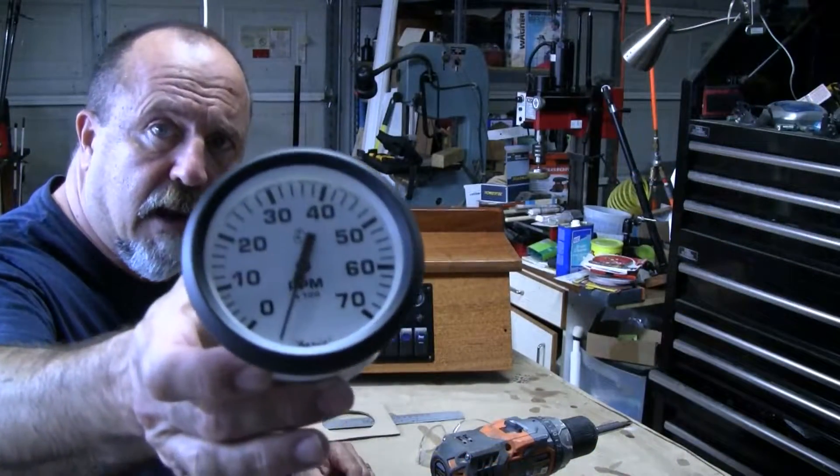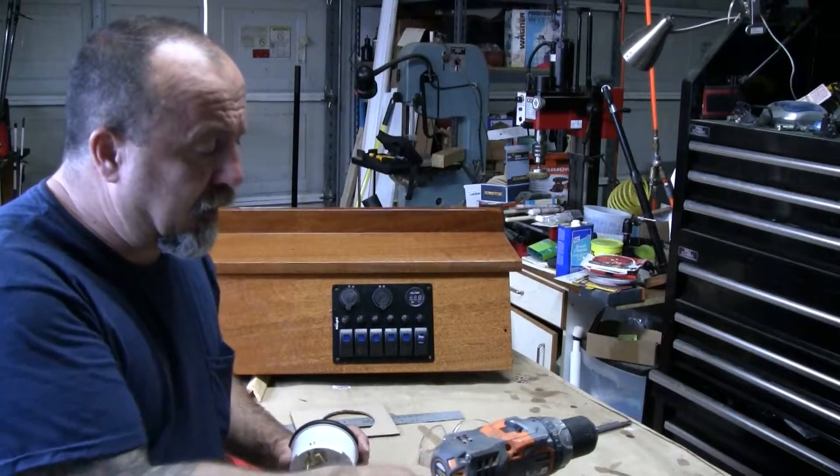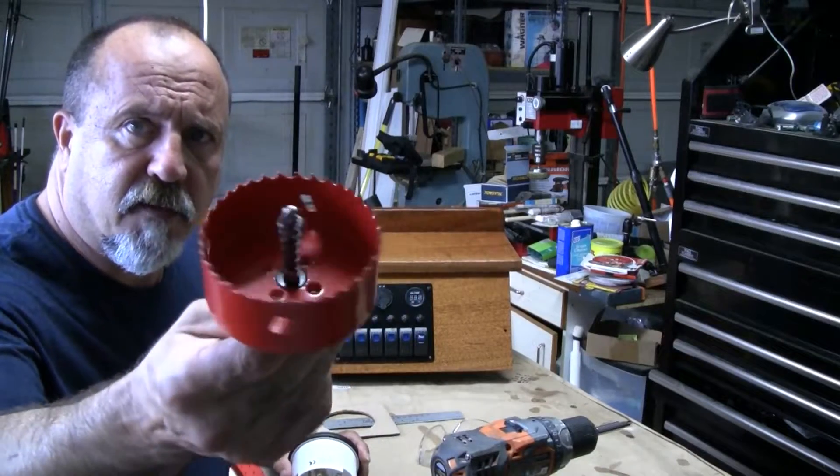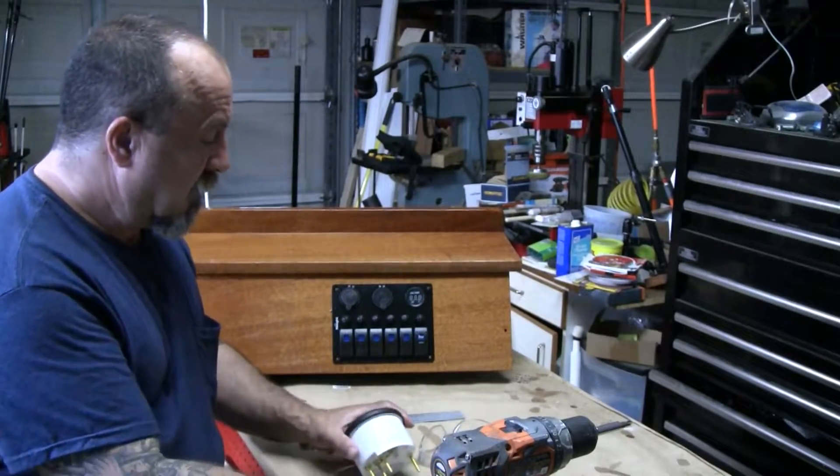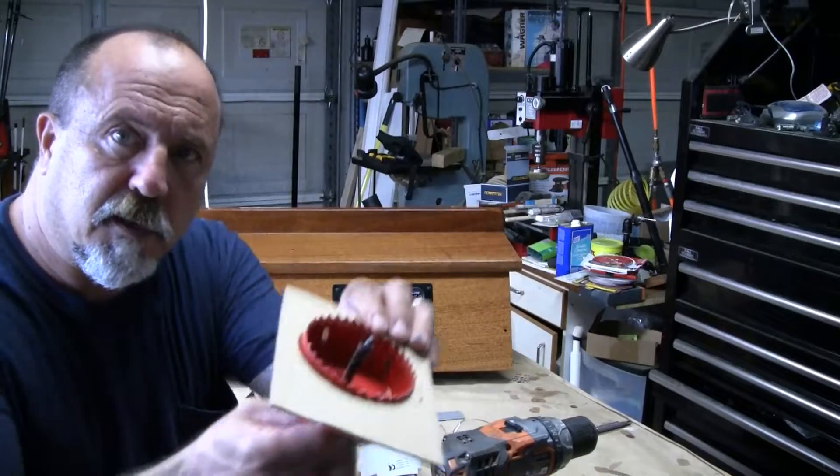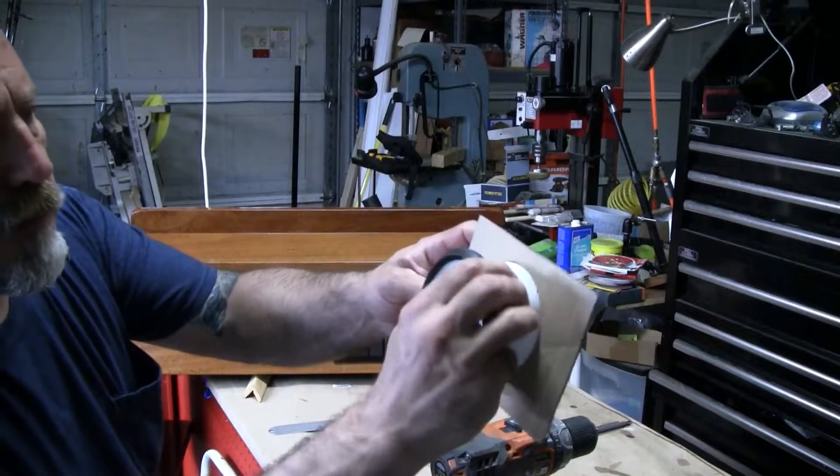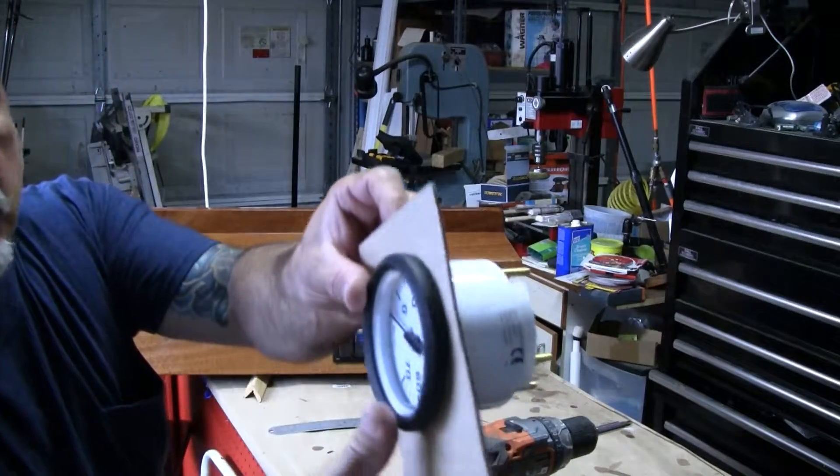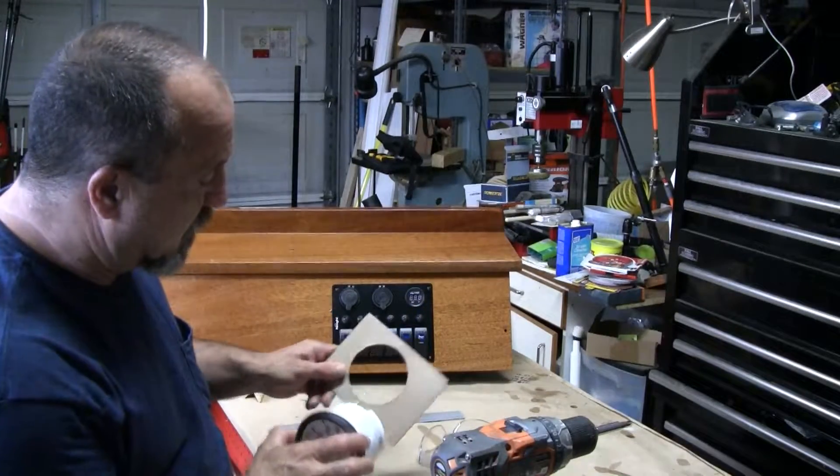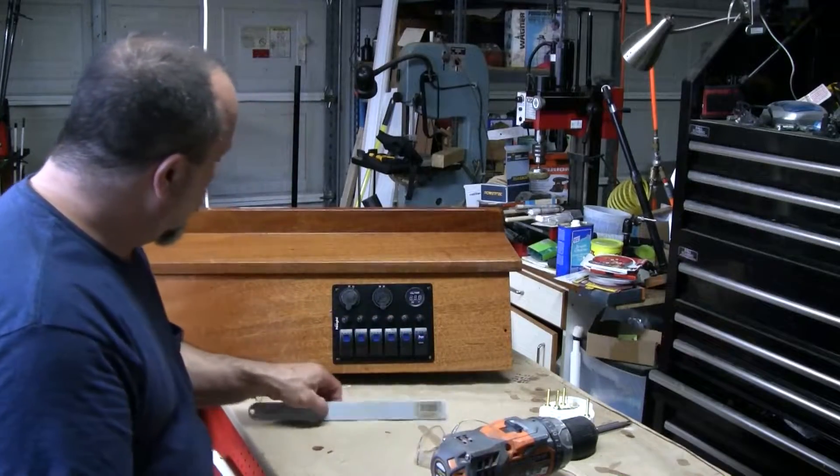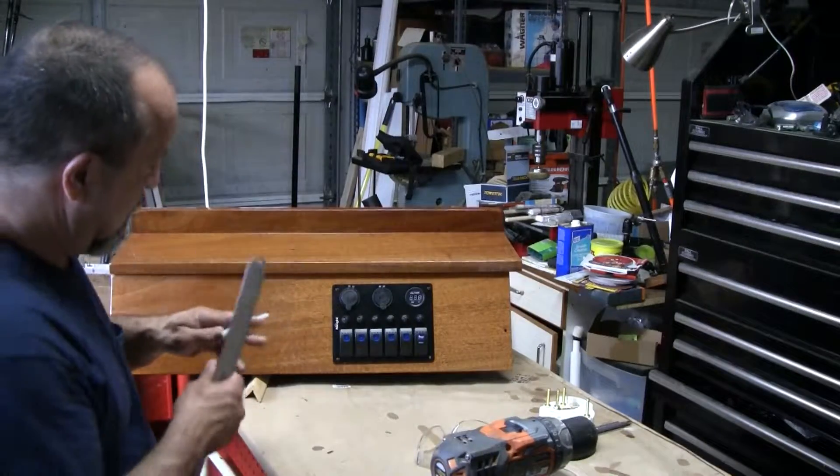Next thing I'm going to do is mount this tachometer, the Faria tachometer. It calls for a three and three eighths inch hole. And I ordered this because three and three eighths is kind of an oddball size. And it's actually 85 millimeter, which is a little bit small. What I did was I actually punched a hole in this piece of cardboard. And I can then see that this tachometer is going to fit, but it's a snug fit. Which is fine. I'd rather it be too small and then I can get a little barrel sander to open it up some. So I'm going to go ahead and continue to mar this beautiful piece of mahogany, unfortunately.